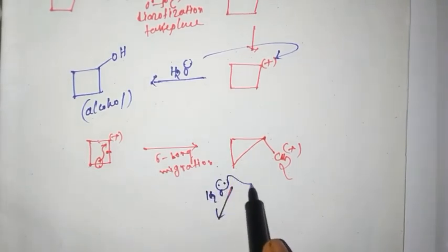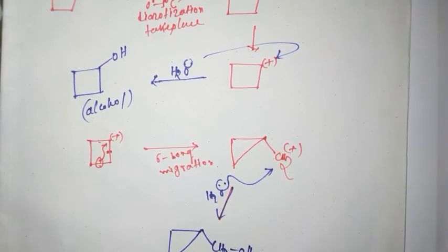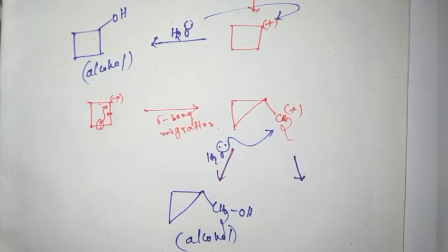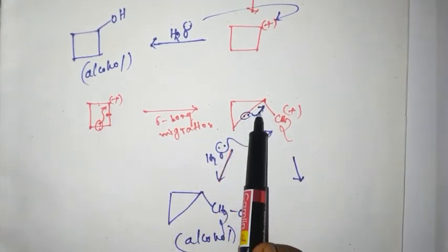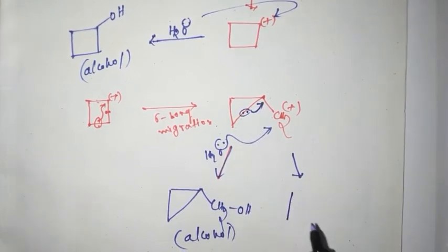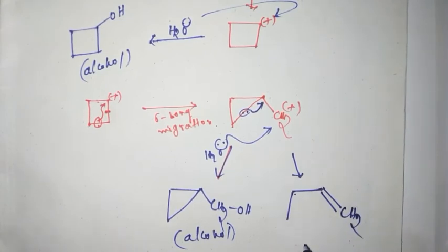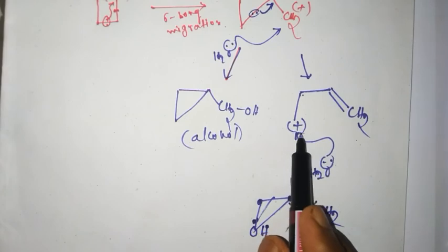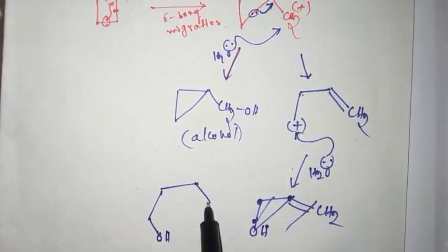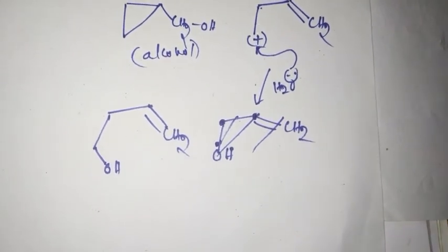Water molecule is present and attacks this carbocation and forms this alcohol. Another possibility is if this ring breaks down, we get this carbocation. Now the molecule attacks this carbocation and forms this product.